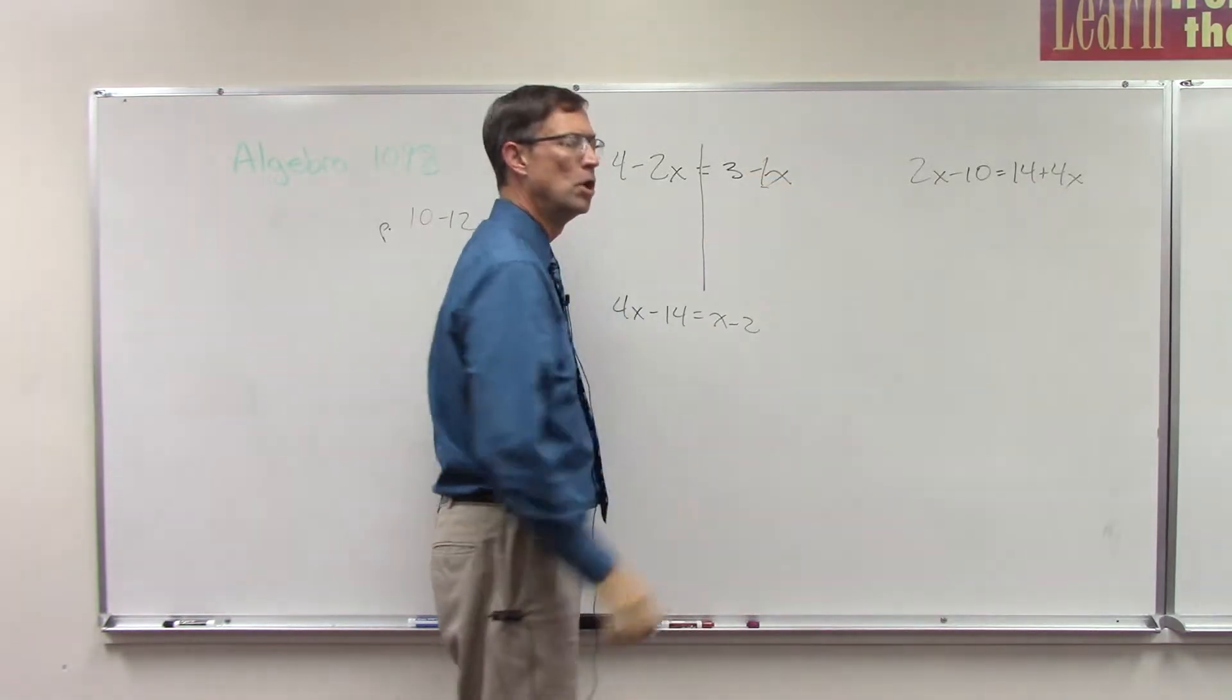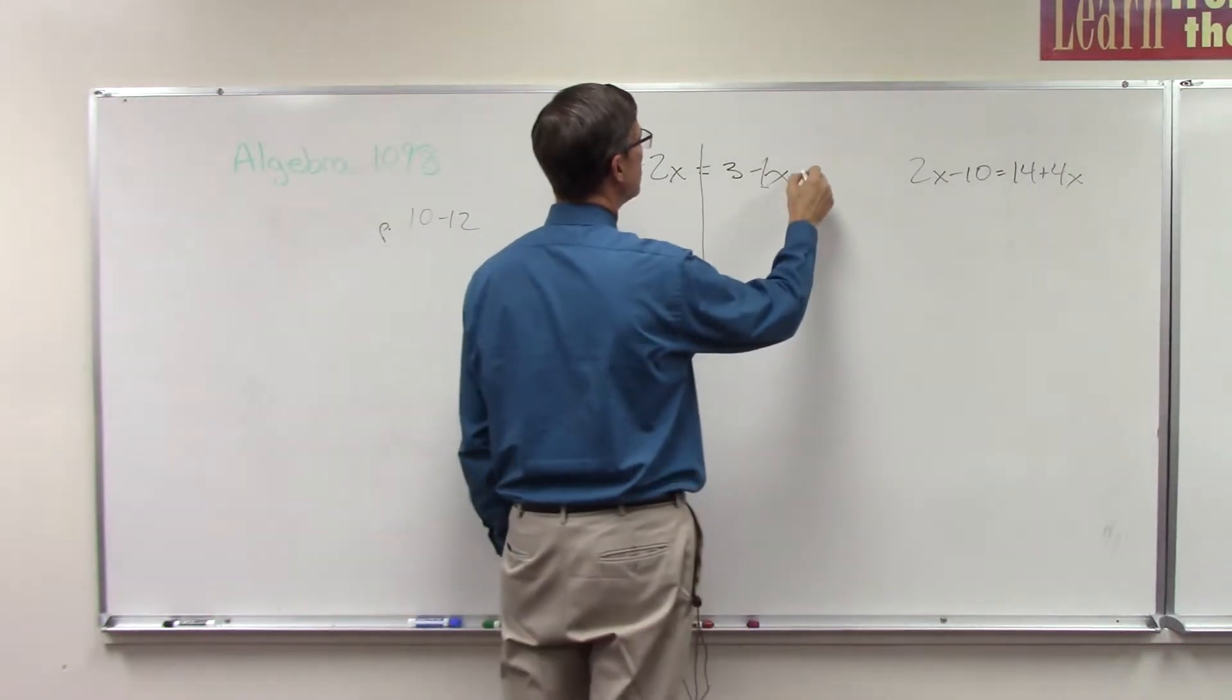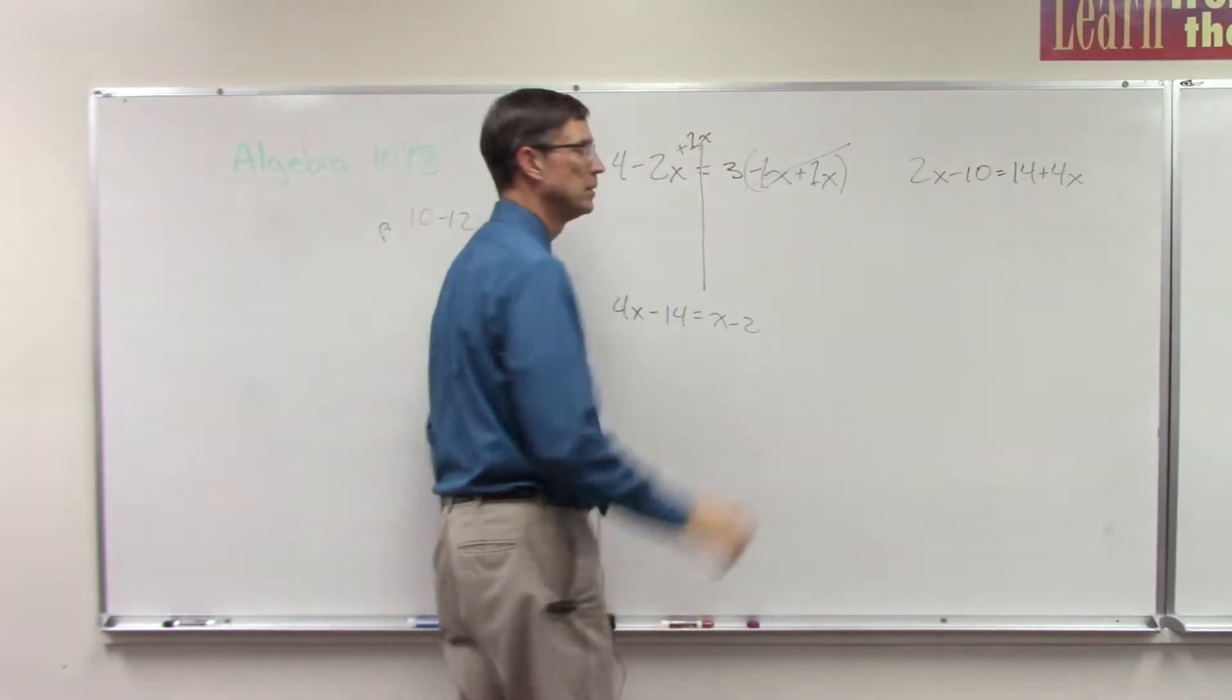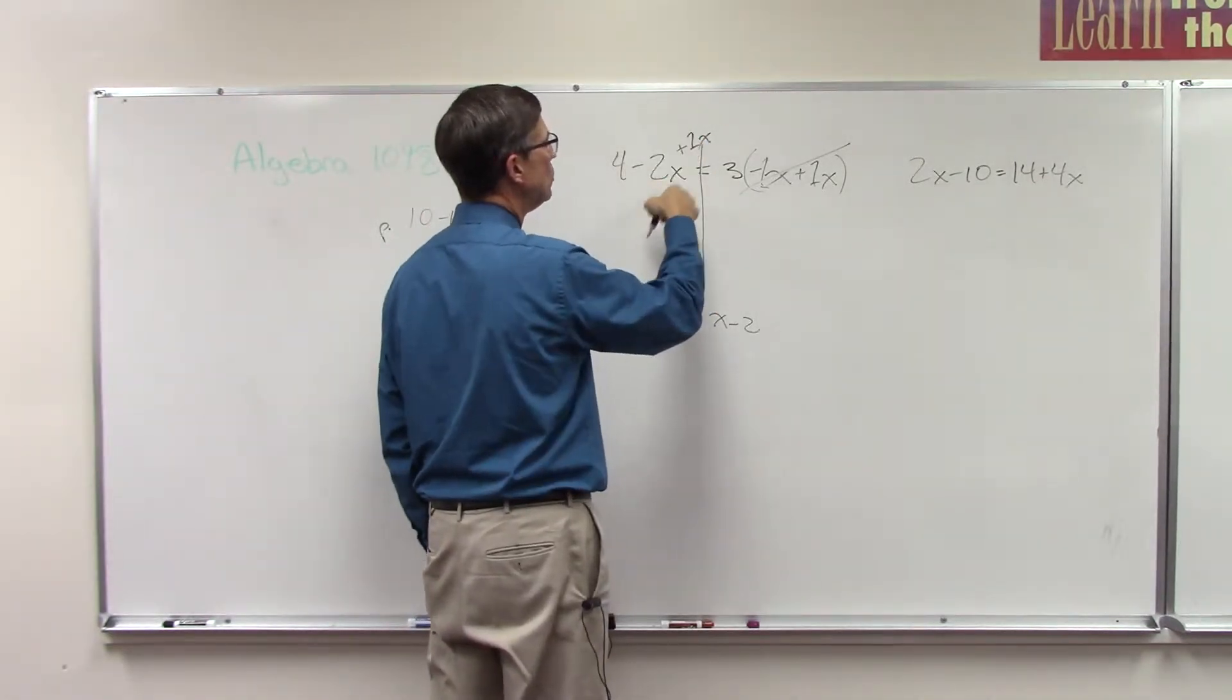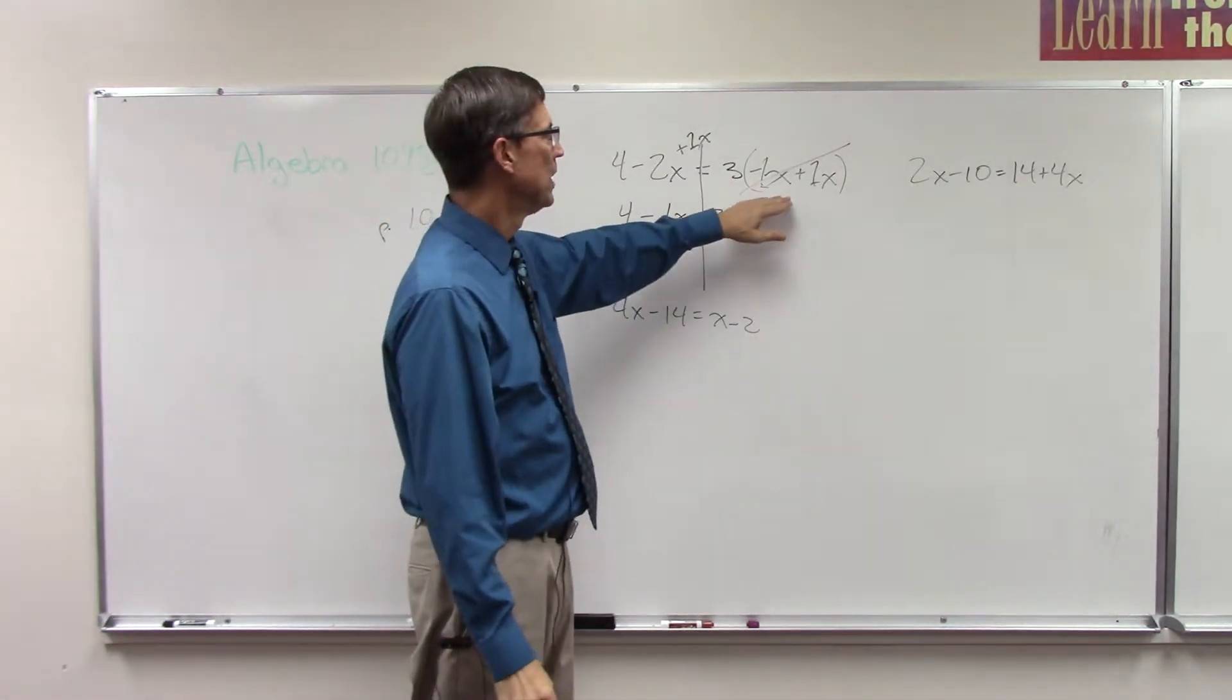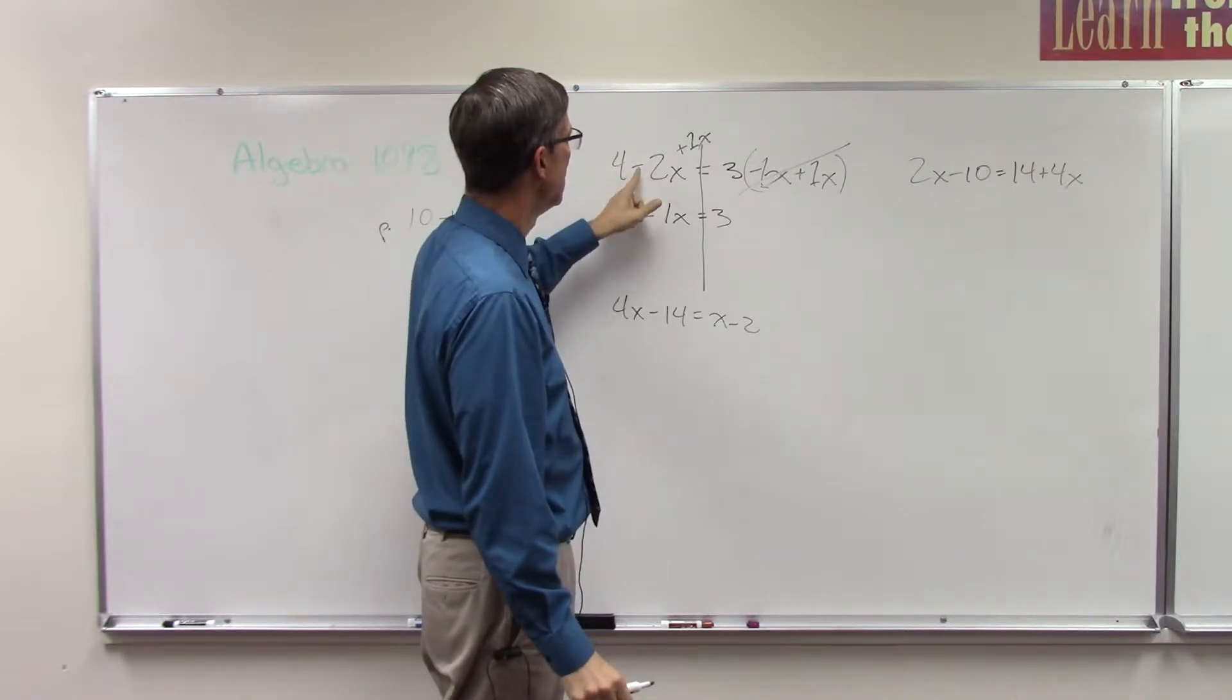Notice I have minus X. I can put a 1 in front of it because if there is no coefficient we can assume it's 1. Since I have minus X, I need to undo that by the opposite, so I want to add 1X. I'm going to add 1X over here, and that's going to disappear. Over here I need to do the same thing, add 1X. Now let me simplify this: negative 2X plus positive 1X, I'm left with negative 1X. Over here, just the 3. We got rid of the negative 1X by adding 1X to both sides, keeping it balanced.